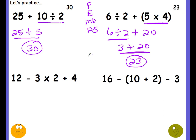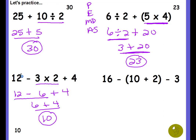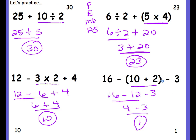Go ahead and pause the video. Work the next two examples on your own. When you have your answers, come back and check if you're correct. Okay: 12 minus 3 times 2 plus 4 — the correct answer is 10. Did you get 10? If not, take a look at the steps and see if you can find your mistake. And our last example: 16 minus parentheses 10 plus 2, minus 3. Did you get 1? Great job if you did. If not, let's see where your mistake is.